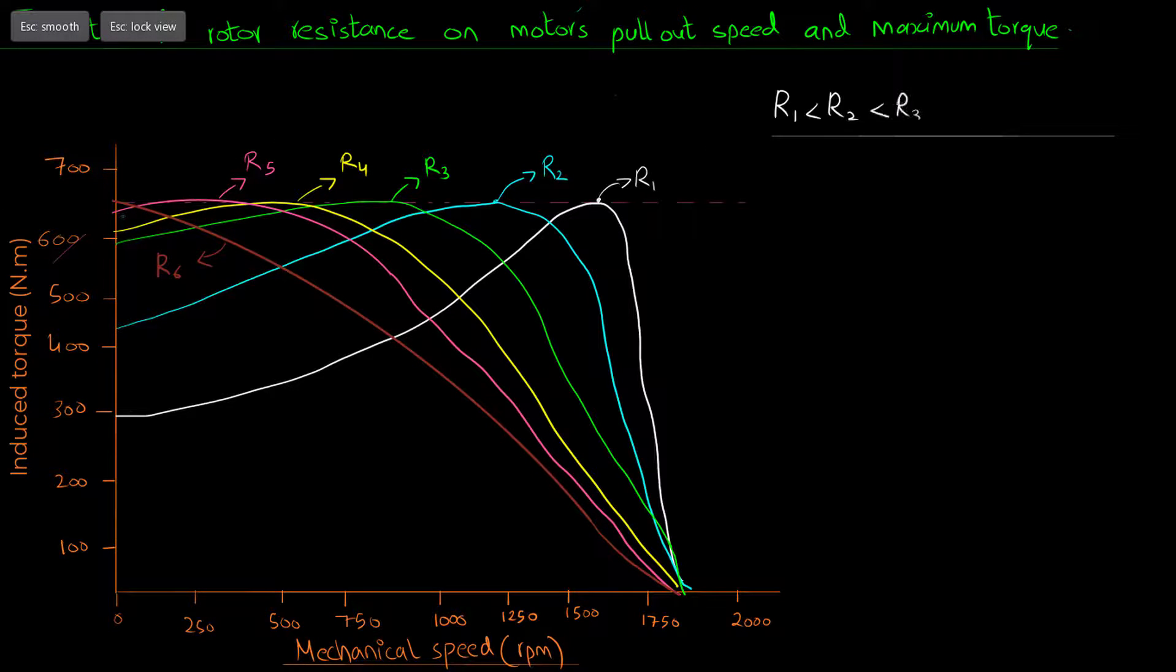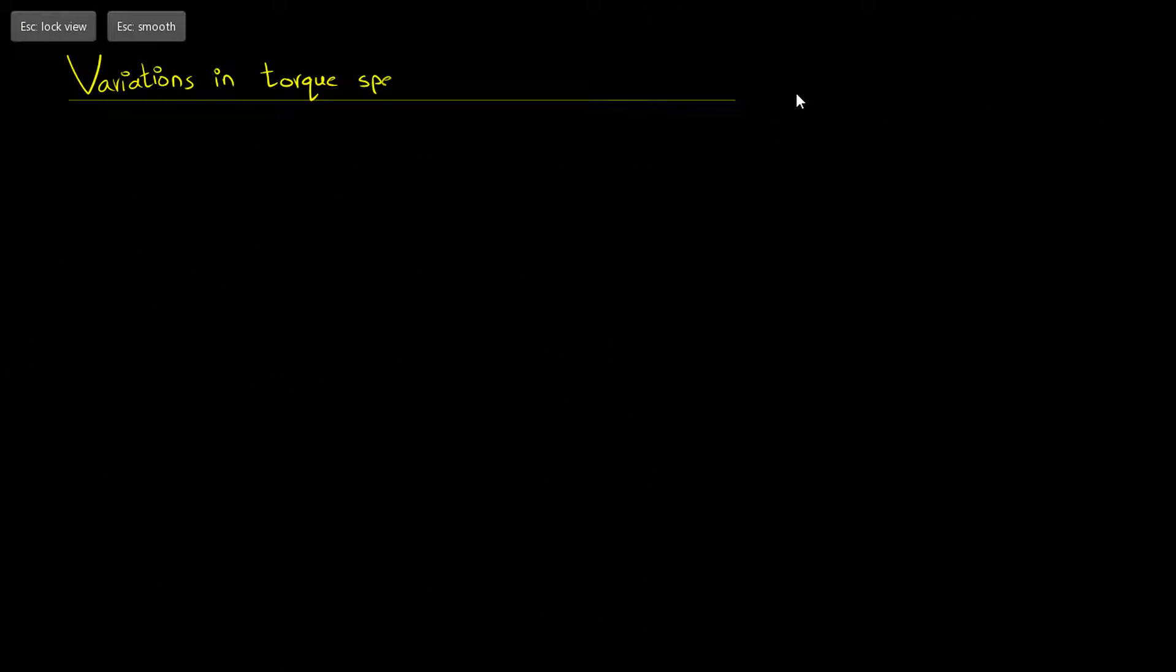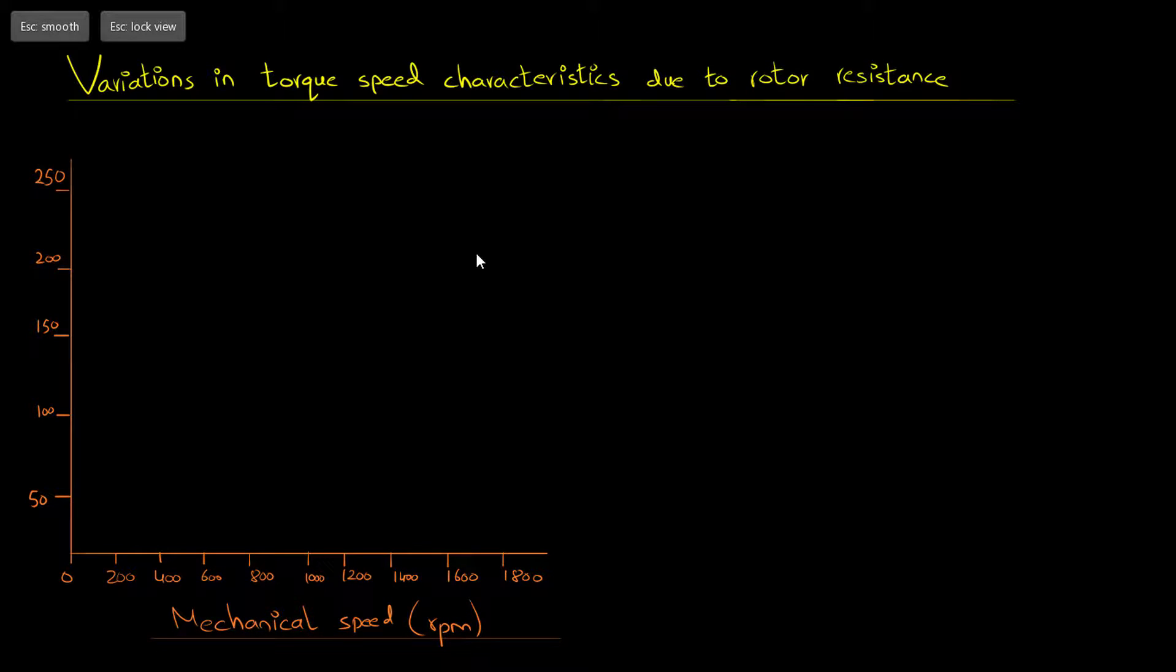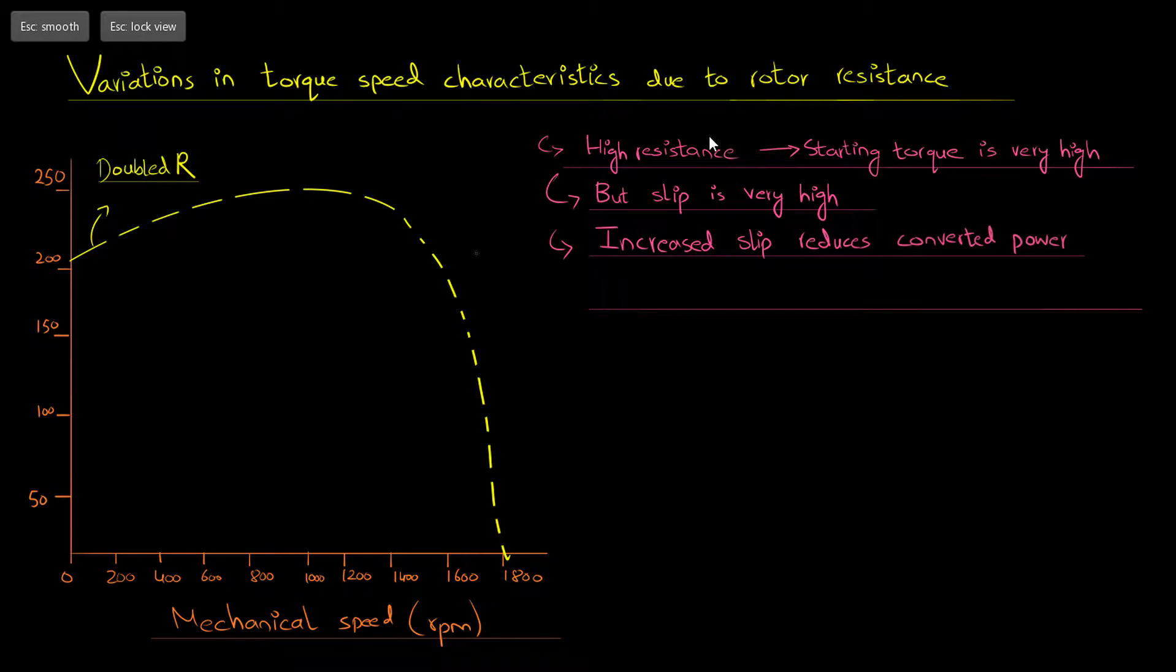Let's have a brief look at the variation in the torque speed characteristics of an induction motor due to its rotor resistance. If the rotor of the induction motor is designed with a high resistance, then the motor's starting torque is very high, but at the same time the slip is very high in normal operating conditions. This increased slip reduces the converted power, so the motor's efficiency is also reduced.